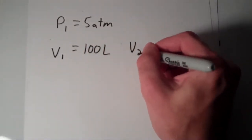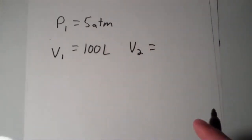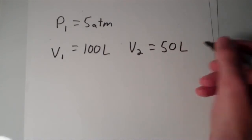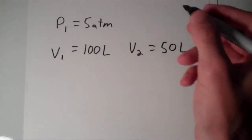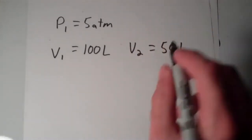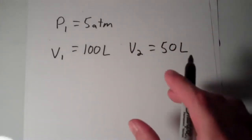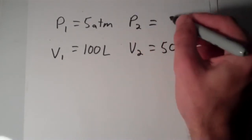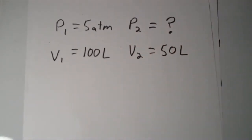Now, suppose I took this gas and I compressed it down from 100 liters to 50 liters. So I decrease the volume to 50 liters. Well, if that's the case, what would my pressure be upon compressing it like that? So in other words, what is my P2? That is what I'm trying to figure out.